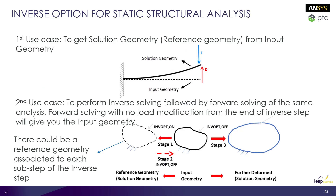At the start of the year, ANSYS introduced a new feature known as the inverse option for static structural analysis. This feature addresses the requirement where the deformed shape and the loads acting on it are known and the user would like to recover the reference geometry. This feature is now available inside ANSYS Mechanical, and as part of this, there is a beta release where once the reference geometry is recovered, the user can then apply additional or alternative loads to further deform the structure and study it.